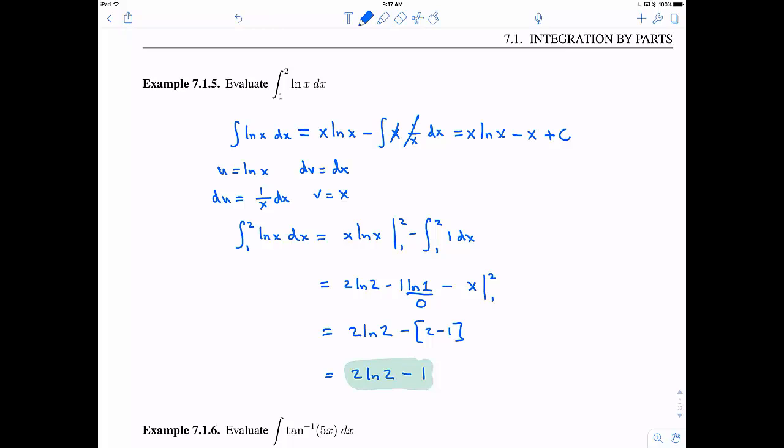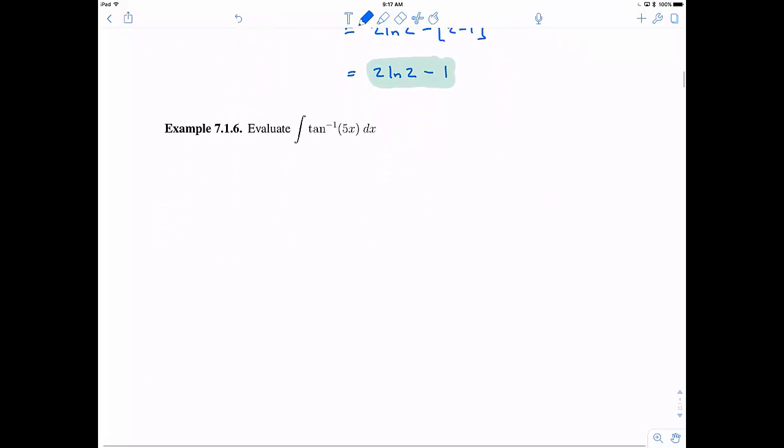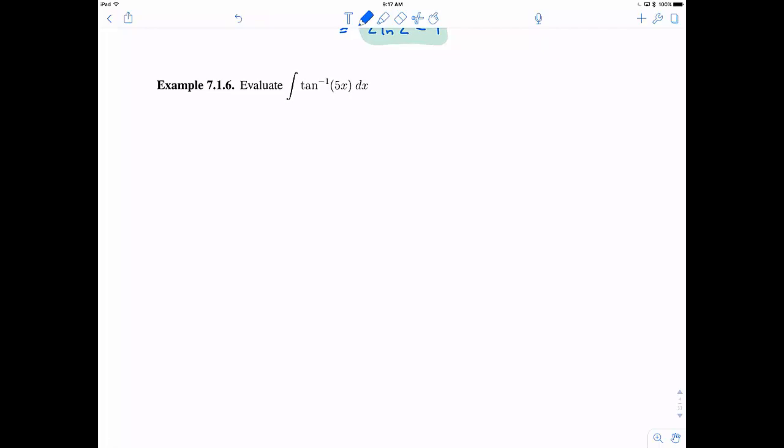So let's try another example here pretty similar at least in the strategy. We have the arc tangent or tangent inverse of 5x. This is the thing we want to integrate. We've never been able to do this before. So let's go ahead and try integration by parts as we are in 7.1. And likewise to the previous problem we can't let my dv be tangent inverse because we don't know how to integrate that. So let's let u be tangent inverse of 5x. And then dv is going to be dx.